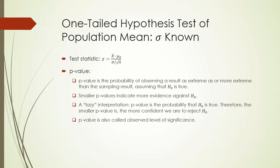Now, let's look at different scenarios of hypothesis testing. We start with one-tailed hypothesis test of population mean when population standard deviation sigma is known. The test statistic we use here is our old friend z-score. It is given by sample mean minus the hypothesized population mean, then divided by the standard error. Based on this statistic, we can compute p-value, one of the most important statistical concepts. Let's see what p-value means.